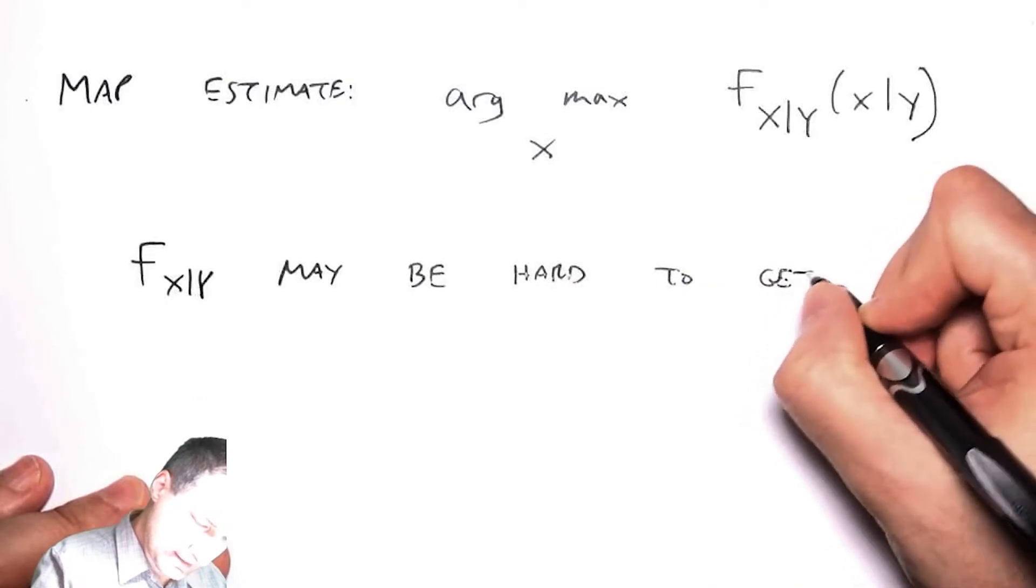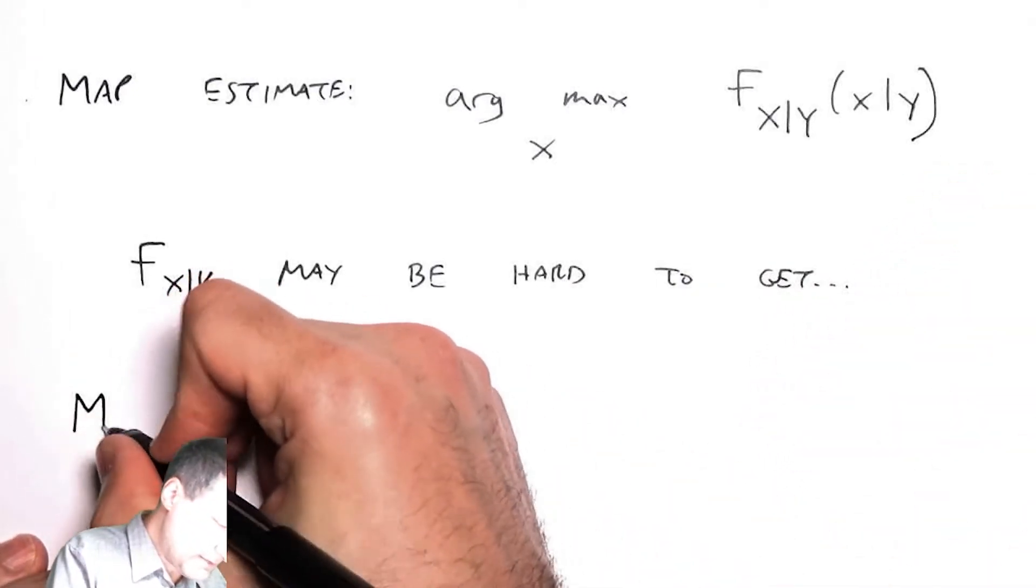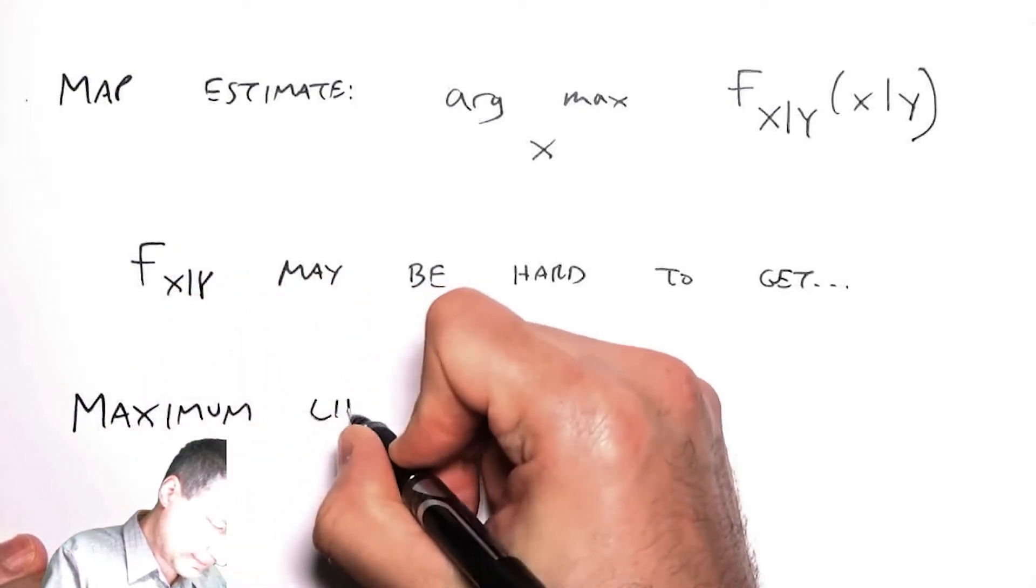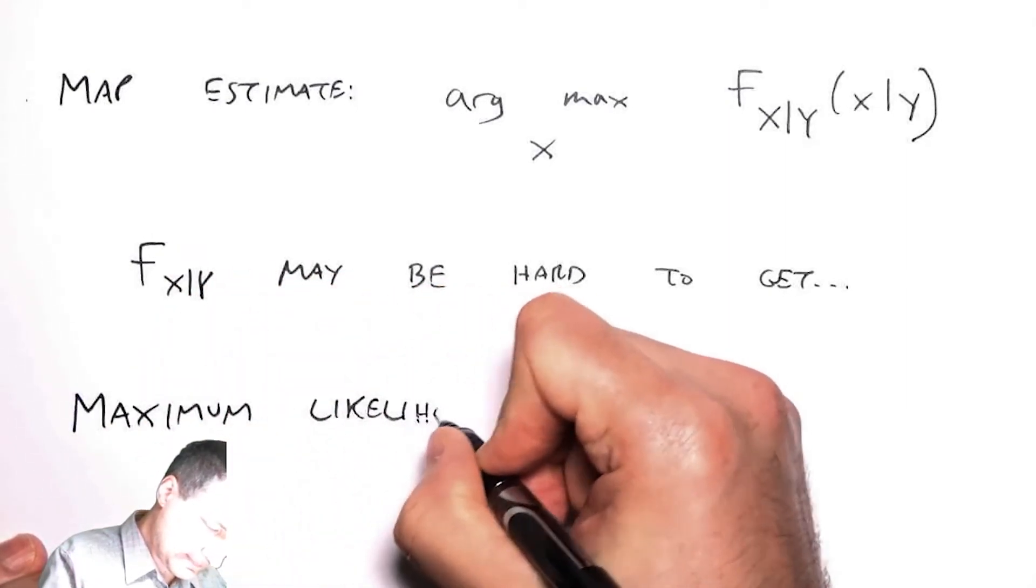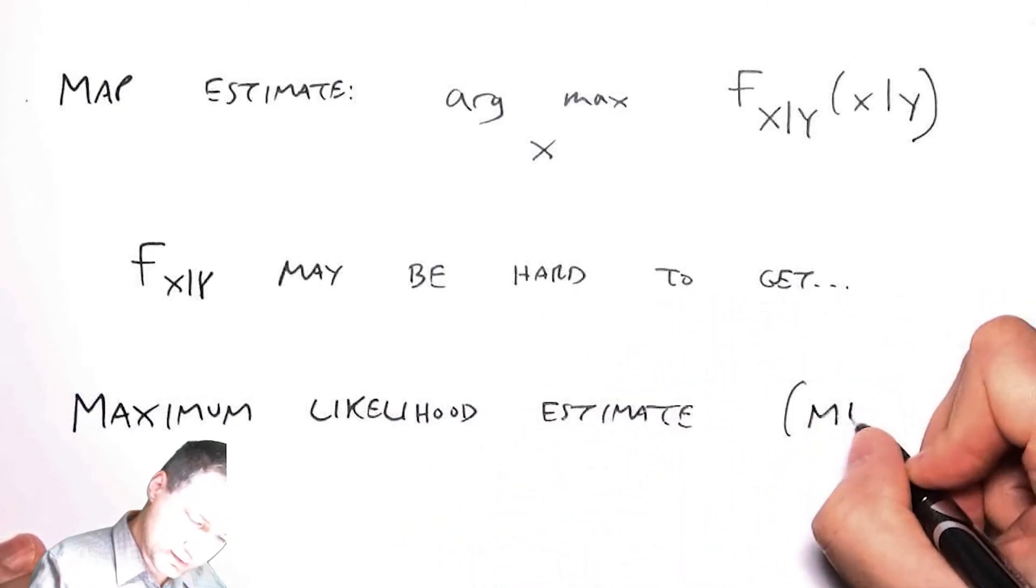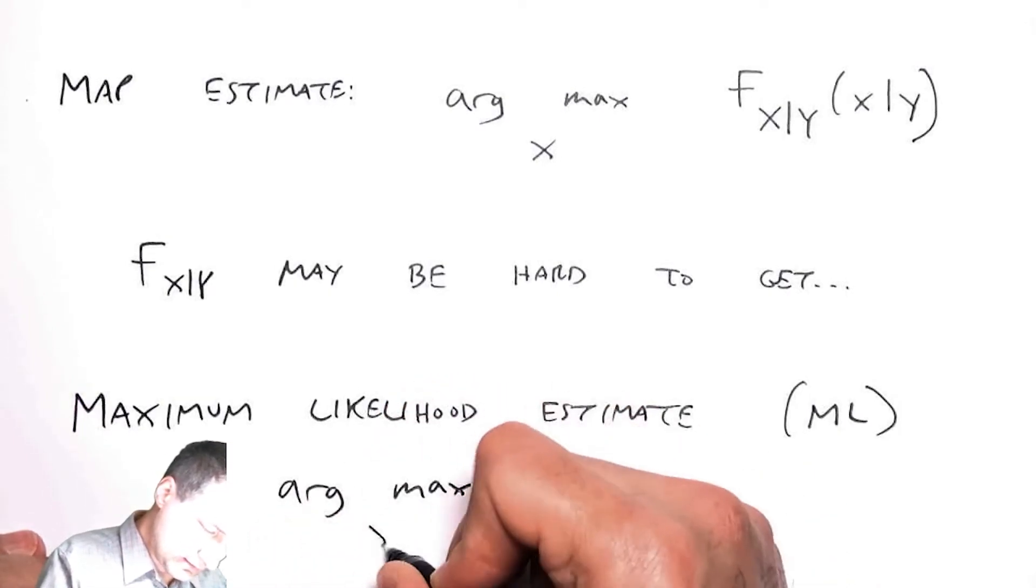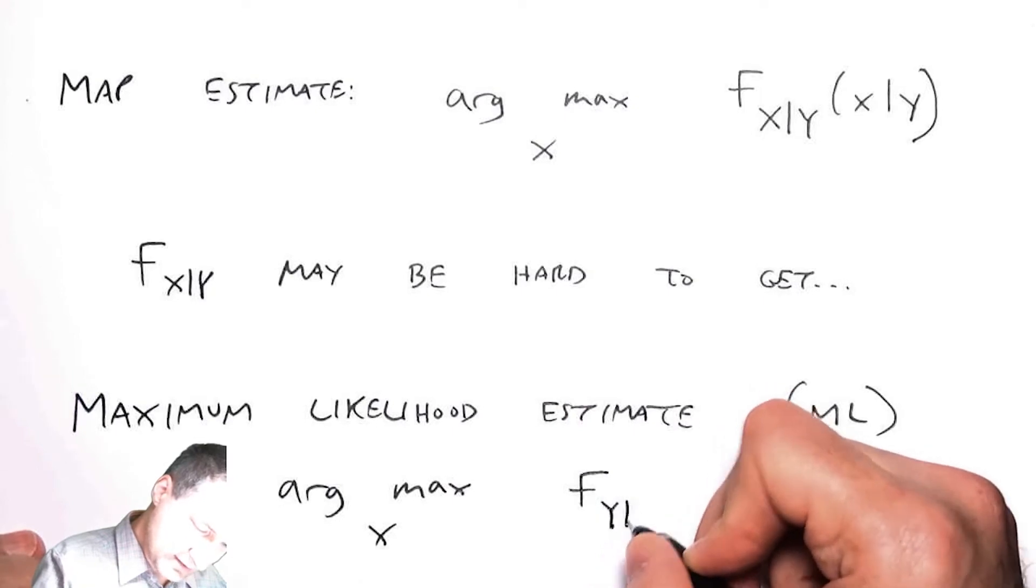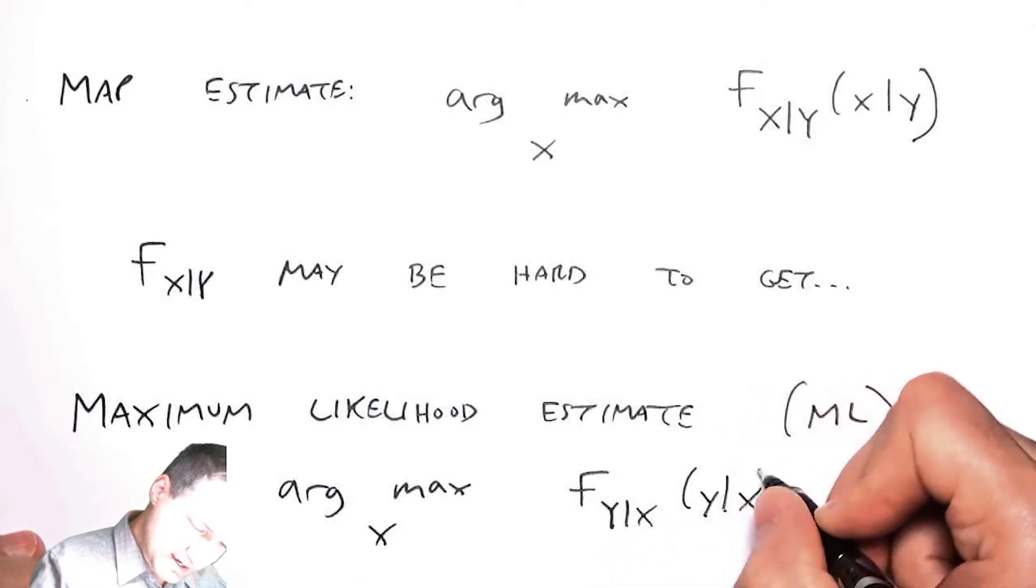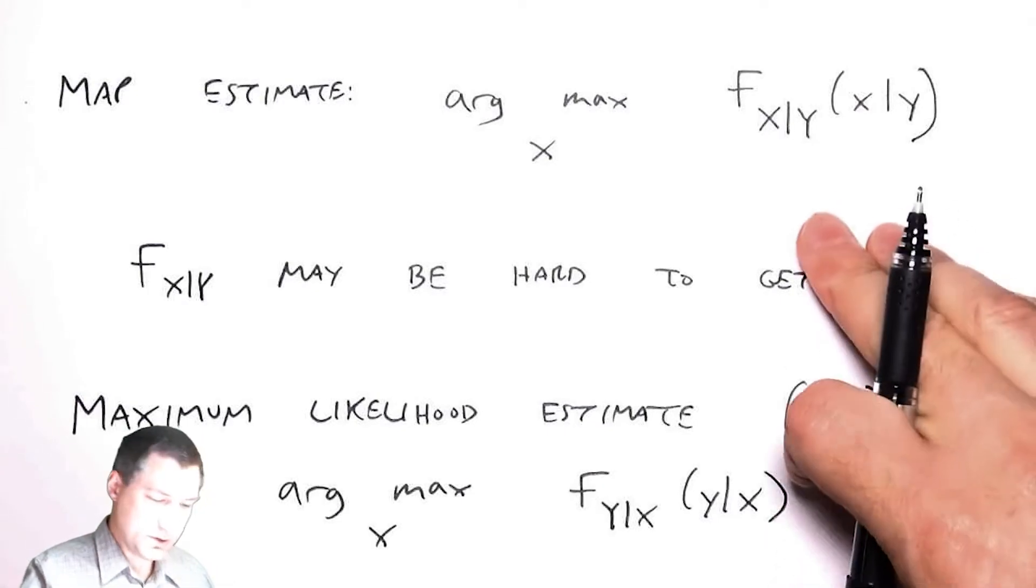Now in the real world, we talked at the end of the last lesson about how it's hard to get this x given y. So what I could do instead would be to do what's called the maximum likelihood or ML estimate. Sometimes you see this called ML estimation. That's like saying maximize the x using the other conditional probability.